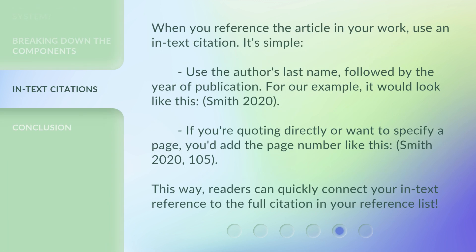When you reference the article in your work, use an in-text citation. It's simple — use the author's last name followed by the year of publication. For our example, it would look like this: (Smith 2020). If you're quoting directly or want to specify a page, you'd add the page number like this: (Smith 2020, 105). This way, readers can quickly connect your in-text reference to the full citation in your reference list.